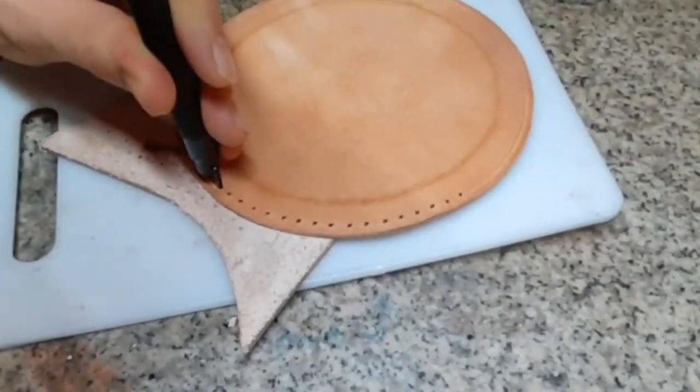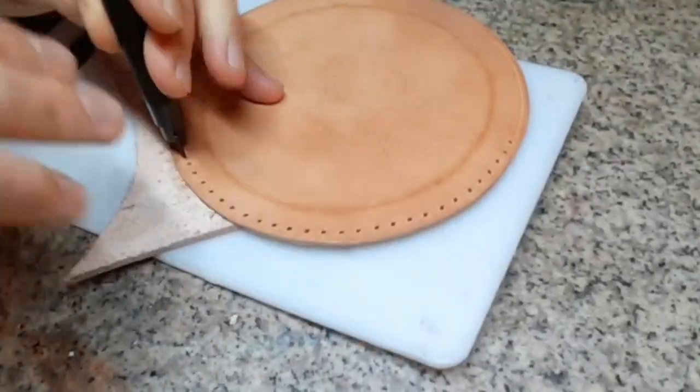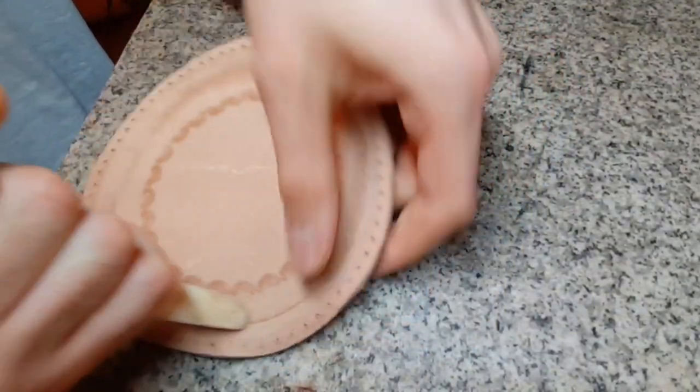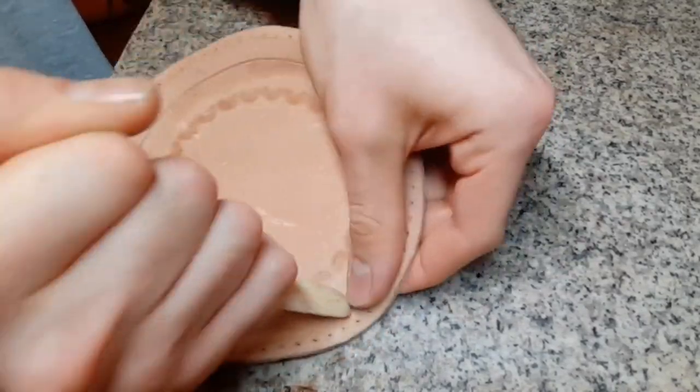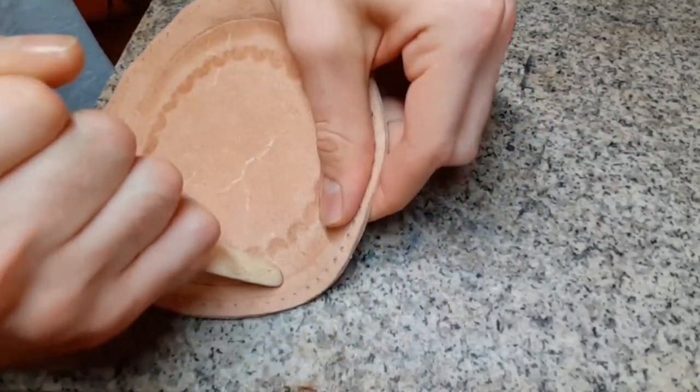Punch some holes for the sewing but only on the side walls for now. With a bone folder then you want to stretch out the marked area to give the whole side piece a more outwards bent round shape.